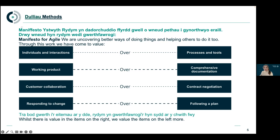The second manifesto value is that we value a working product over comprehensive documentation. The reason for this is that there is value in saying what we're going to do, but ultimately when we can get something in the hands of our users, it can prove whether we're moving in the right direction or if we need to pivot. Ultimately we need outcomes over output, but often we see the reverse happening.